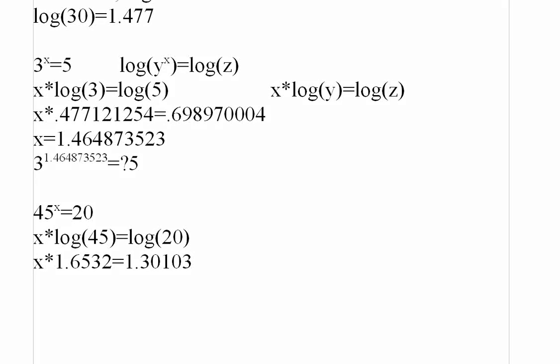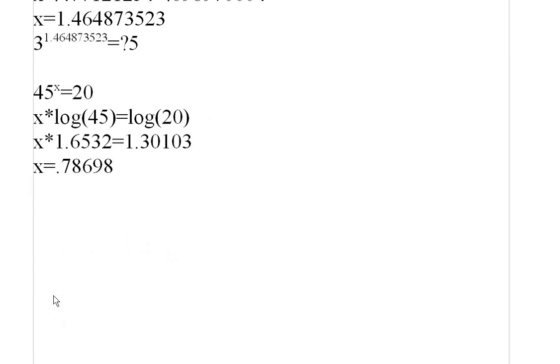Now, to figure out what this exponent is, 45 raised to what power equals 20? Solve this little equation right here for x and you will be golden. And it has to be an exponent that's less than 1 because 20 is smaller than 45. And that's just what we're going to get when we do this. Let's divide that by 1.6532. And we're going to get an answer of approximately .78697, something like that. I'll round that off to .78698.